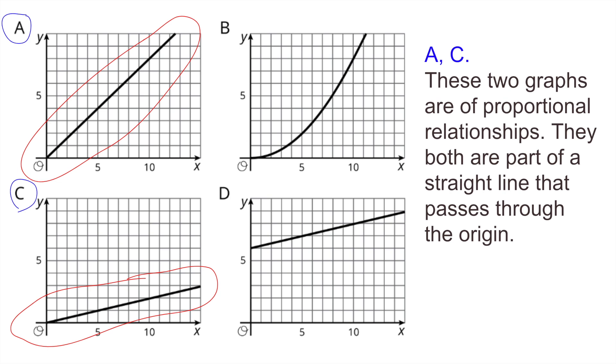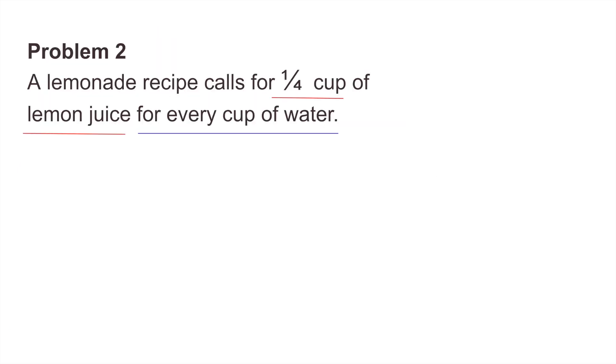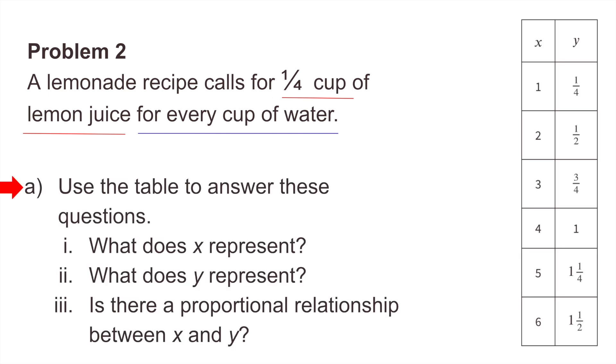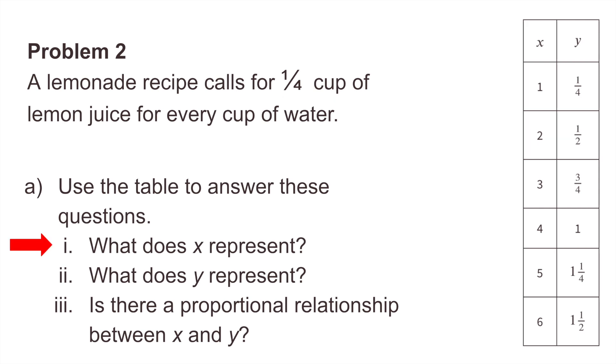Number two: a lemonade recipe calls for one-fourth cup of lemon juice for every cup of water. Part a: use the table to answer these questions. What does x represent? X represents the number of cups of water. What does y represent? Y represents the number of cups of lemon juice. Is there a proportional relationship between x and y? Yes, there is a proportional relationship between x and y.